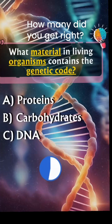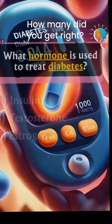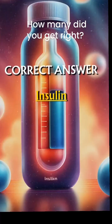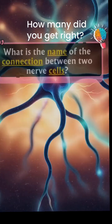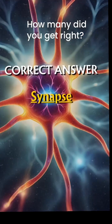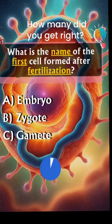...the genetic code? Answer C: DNA. What hormone is used to treat diabetes? Answer A: insulin. What is the name of the connection between two nerve cells? Answer A: synapse. What is the name of the first cell formed after...